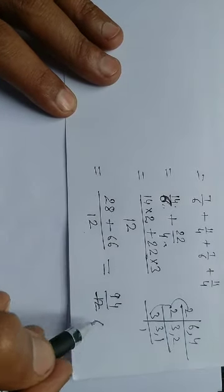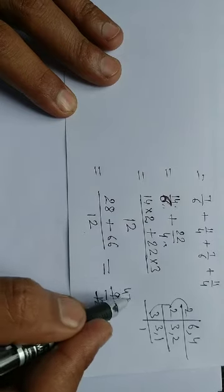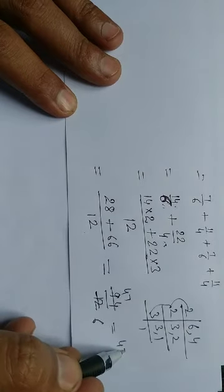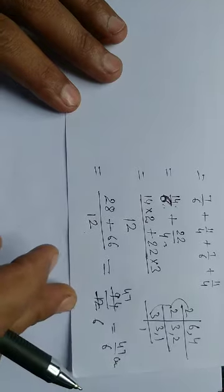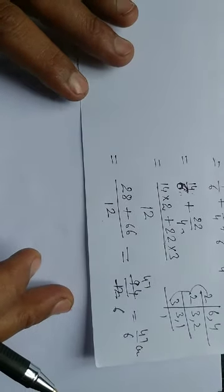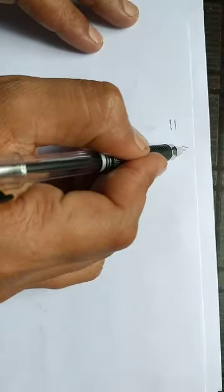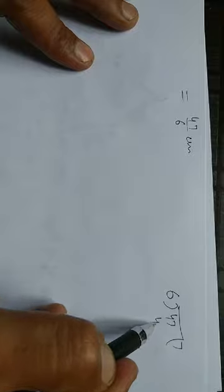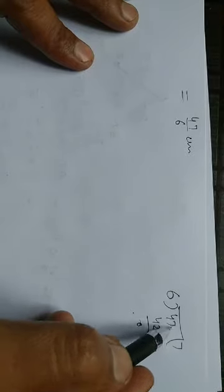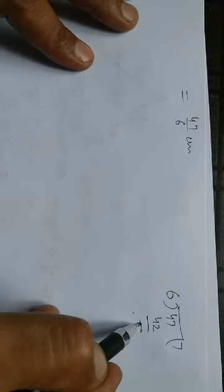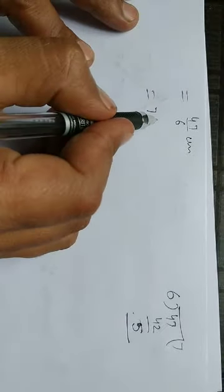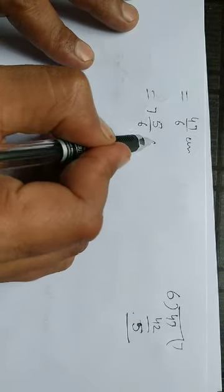This equals 6+8 is 14, plus 6+2 is 8, giving 119/12. 2×6 is 12, so this equals 14 and 47/6 cm, excuse me, 7 and 47/6 cm. Converting to mixed fraction: 47 divided by 6 is 7 with remainder 5, so 7 and 5/6 cm.